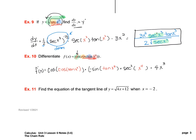That would be my derivative. The only thing I could do would be to move the negative and the 4x cubed out to the front. F prime of x would be negative 4x cubed, cosine of the cosine of tan x to the fourth, times sine of tan x to the fourth, times secant squared of x to the fourth. And that is all we can do for the derivative of that one.